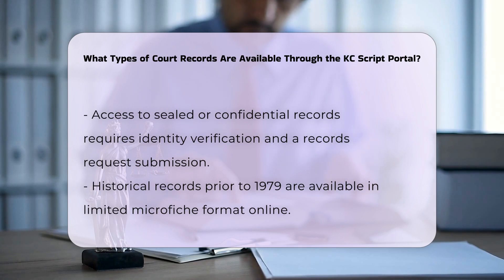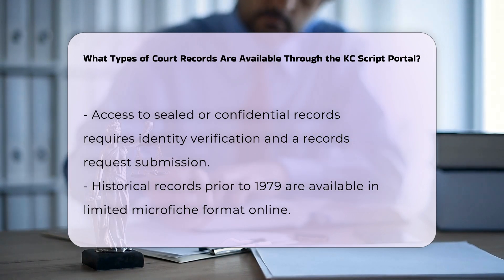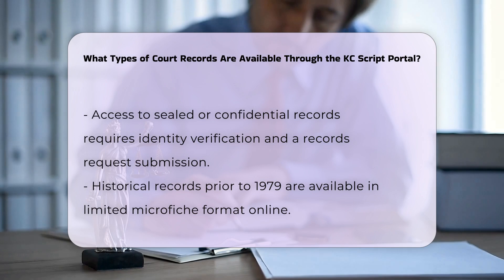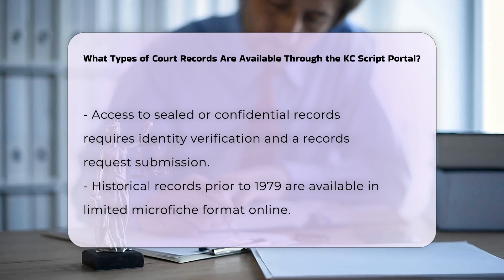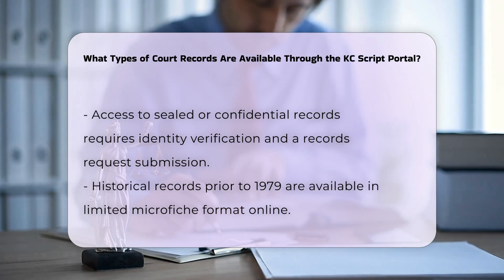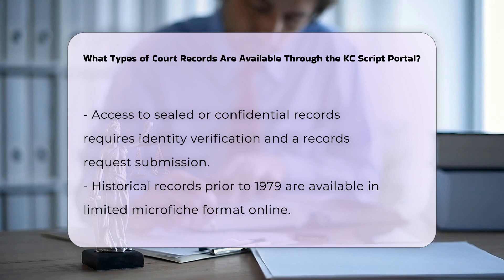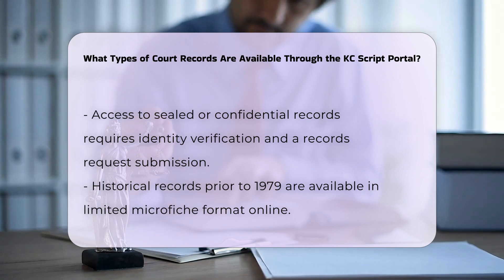Historical records: for cases prior to 1979, there are limited microfiche records available online, but additional microfiche records can be accessed at the King County Superior Court Clerk's Office in Seattle.